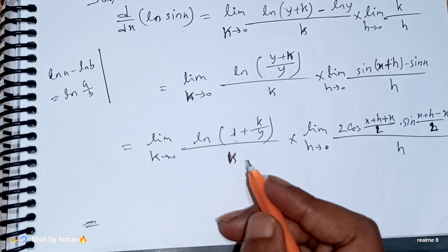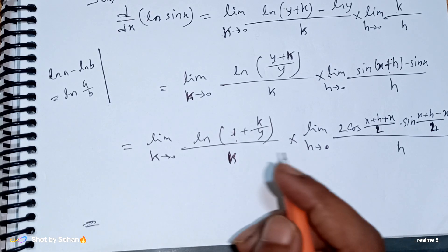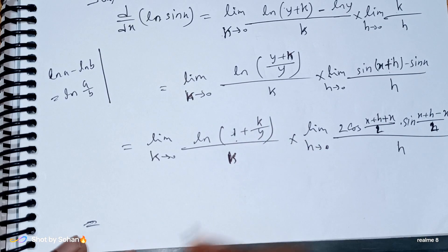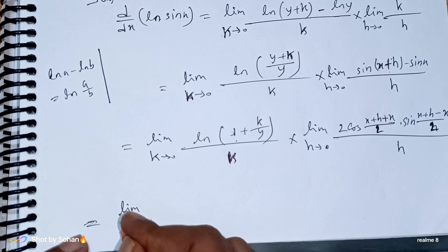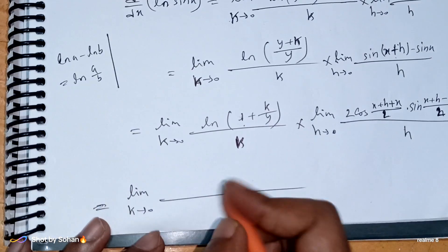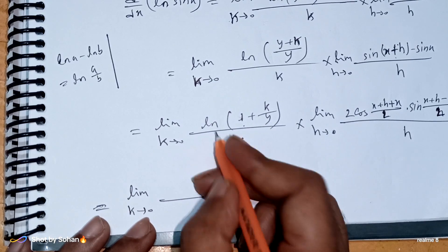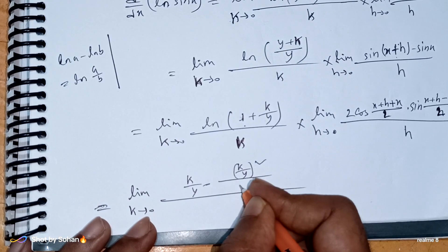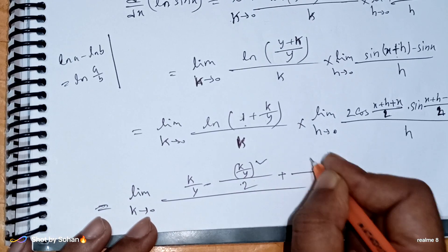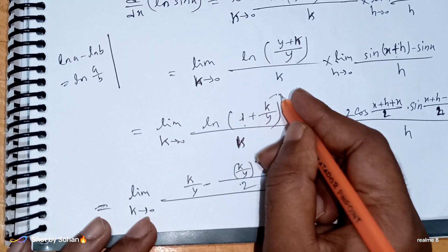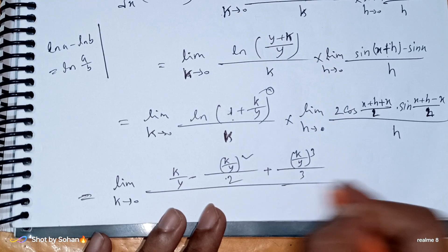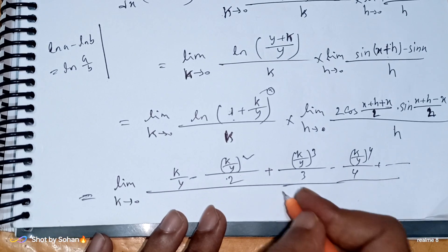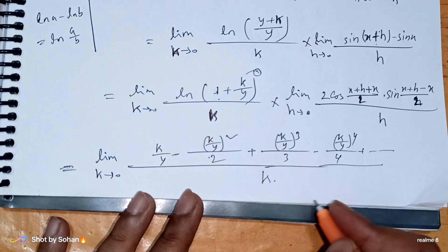For the next part, recall that ln(1 plus x) equals x minus x squared by 2 plus x cubed by 3 minus x to the 4 by 4 and so on. So limit k tends to 0: ln((y plus k)/y) expands as k/y minus k squared by 2y squared plus k cubed by 3y cubed minus k to the 4 by 4y to the 4, divided by k.